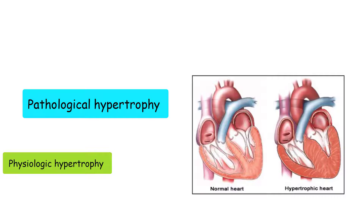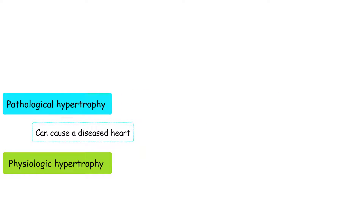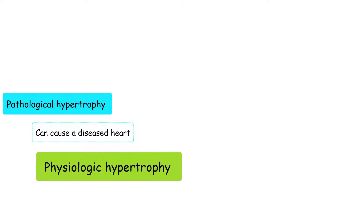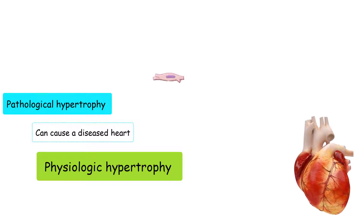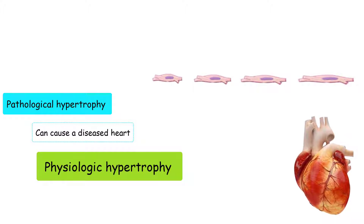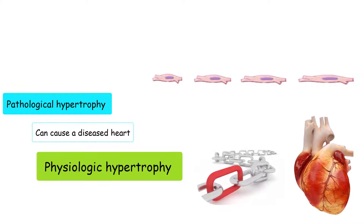This is why the growth is termed pathologic, as it can cause a diseased heart. Physiologic hypertrophy is the beneficial growth of the heart that can occur from exercise training. In physiologic hypertrophy, the myocardium — which is the muscle layer of the heart — grows in series. This means new contractile units are added to the end of cardiac myocytes, which are the cells of the myocardium, like adding links to a chain to make the chain longer.